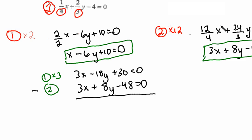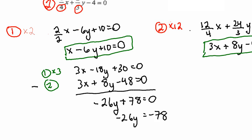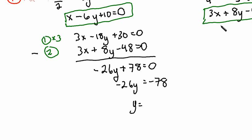So 3x minus 3x is 0x's. Negative 18 subtract 8y is negative 26y. And 30 subtract negative 48 is actually 30 plus 48. So that's plus 78 equals 0. So now solving for y, I'm going to move 78 to the other side and divide both sides by 26. So y is negative 78 over negative 26,